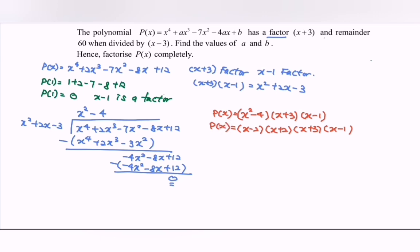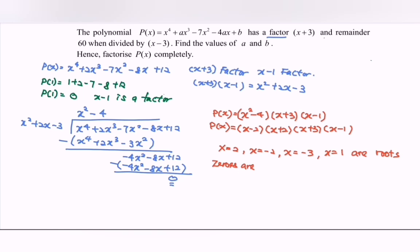For extra information, the roots are: x = 2, x = -2, x = -3, and x = 1. The zeros are -3, -2, 1, and 2.